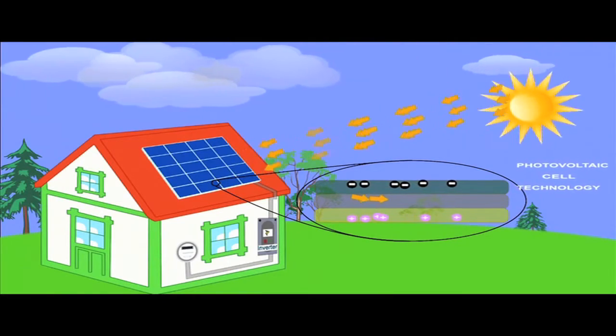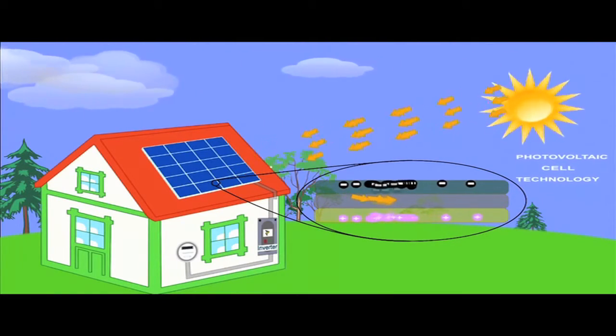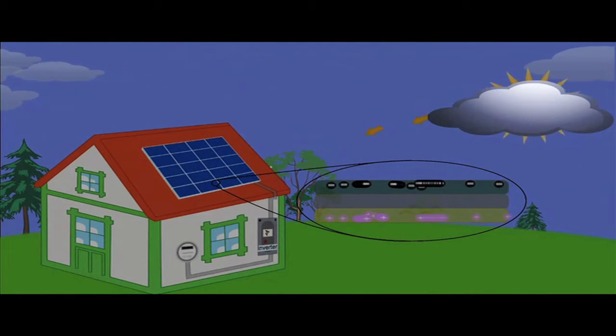The amount of electricity generated depends on the intensity of the sun. But even on cloudy days, your solar panels will still absorb sunlight and generate energy.